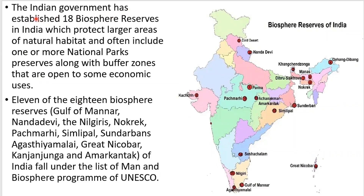The Indian government has established 18 biosphere reserves in India which protect large areas of natural habitat and include one or more national parks and sanctuaries with buffer zones open to some economic uses. Out of these 18, eleven biosphere reserves fall under UNESCO's Man and Biosphere Program. They are the Gulf of Mannar, the Nilgiris, Nokrek, Pachmarhi, Simlipal, Sundarbans, Agasthyamalai, Great Nicobar, Kangchenjunga, and Kamarkati. A map shows all 18 biosphere reserves of India.